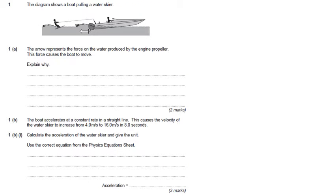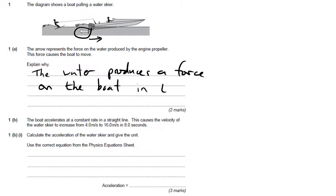Question 1A is about Newton's third law of motion, that every action has an equal and opposite reaction. If the boat produces a force on the water, the water produces an equal and opposite force back on the boat in the forward direction. So our explanation is that the water produces a force on the boat in the forward direction.